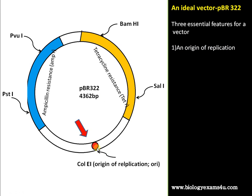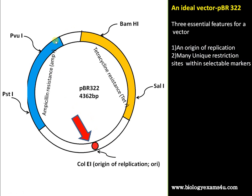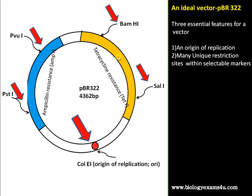There are three essential features for a vector. First is an ori, or origin of replication, that is required for replicating inside the host cell. Second are unique restriction sites within the selectable markers. The restriction enzymes and their sites include PvuI, PstI, BamHI, and SalI — this vector has restriction sites for all these restriction enzymes.